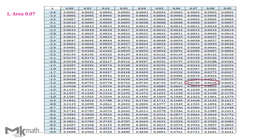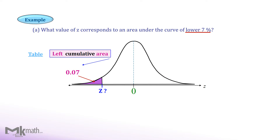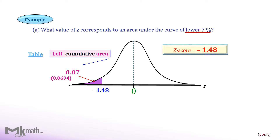We found two values close to 0.07 — one is smaller and the other is larger. Comparing the differences, we use 0.0694. Go straight to the left to read the first two digits of the z-score and go straight up to read the second decimal place. So the z-score should be negative 1.48. We use the closest area 0.0694 to 0.07, so the z-score that corresponds to the left cumulative area 0.07 is −1.48.